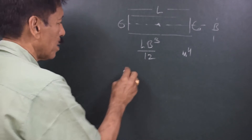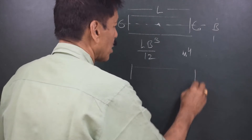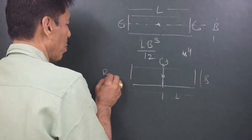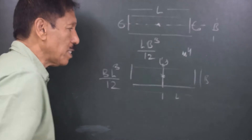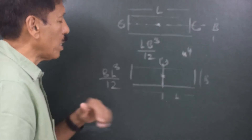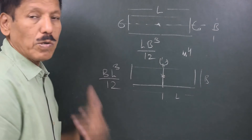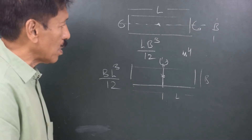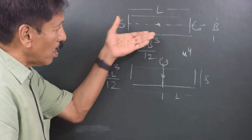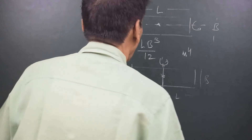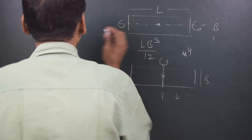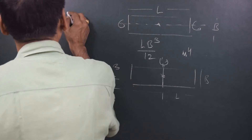If the axis is perpendicular to the length, the moment of inertia about this axis would be BL³/12. So you can see: along the axis it is power 1, and perpendicular to the axis it is power 3. This is the moment of inertia for a rectangle with the axis passing through the centroid.